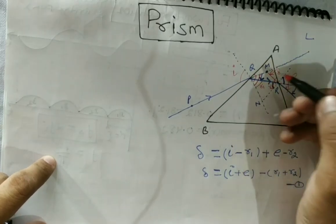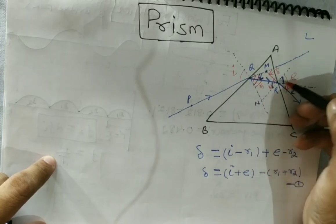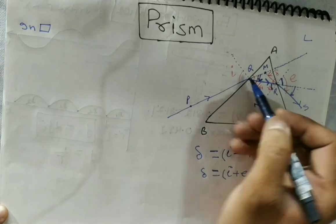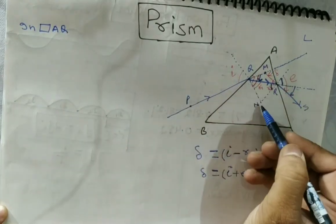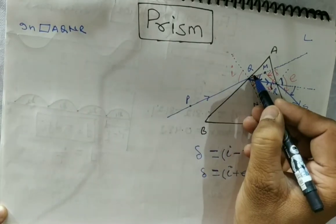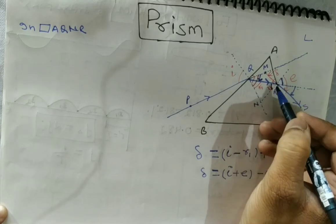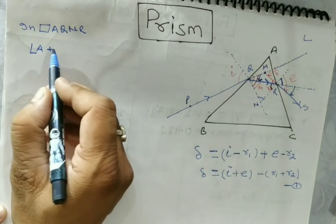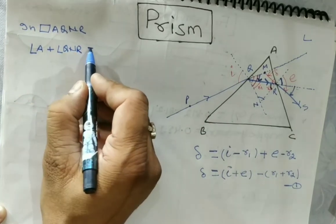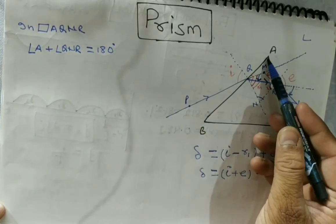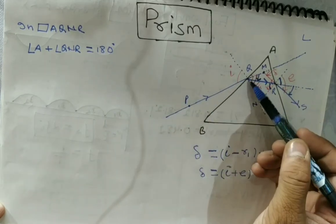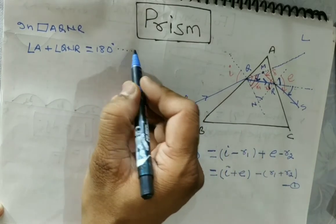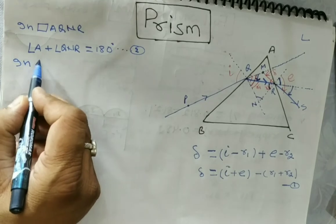If we take the quadrilateral A, Q, O, R — this angle is 90 degrees and this angle is also 90 degrees. In a quadrilateral, the sum of all angles is 360 degrees. Since two angles sum to 180 degrees, angle A plus angle QOR must equal 180 degrees. Let this be equation number 2.